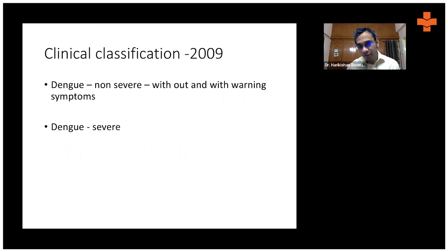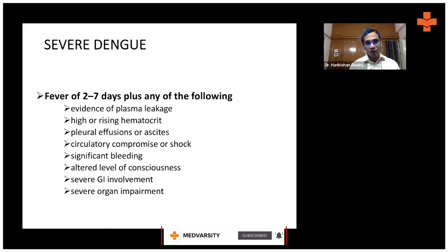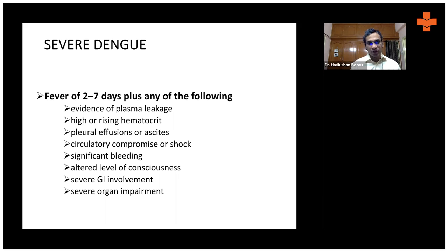That was an older classification before 2009. From 2009, the World Health Organization redefined the clinical syndrome. They made it simple: dengue without any warning symptoms, or dengue which is severe. A patient with dengue fever or suspected dengue fever is classified as severe if they have evidence of plasma leakage — that is, rising hematocrit, or plasma leaking into the pleural space or abdominal cavity.